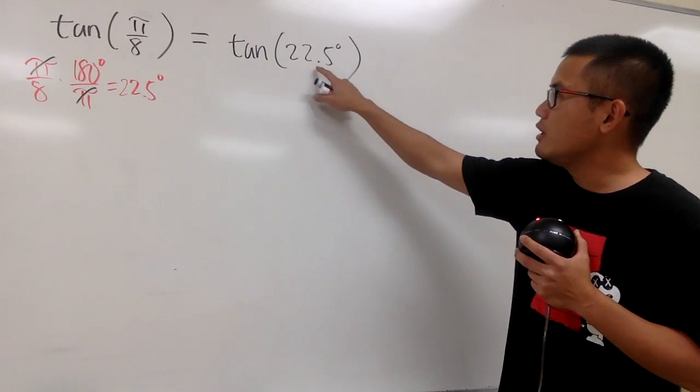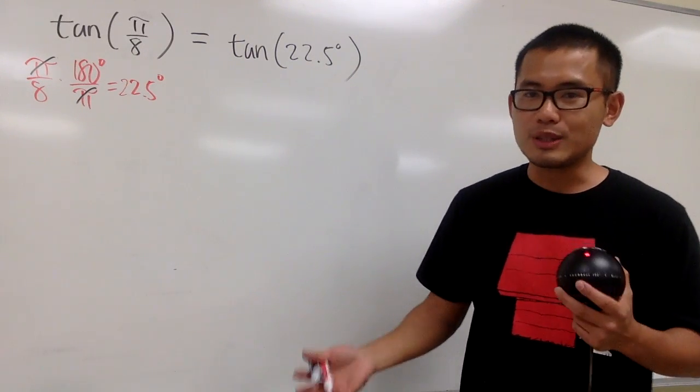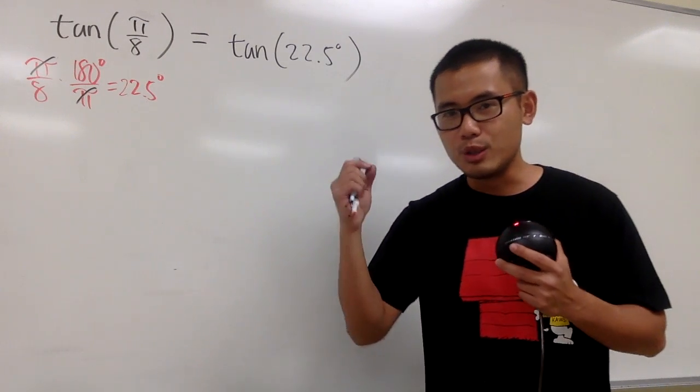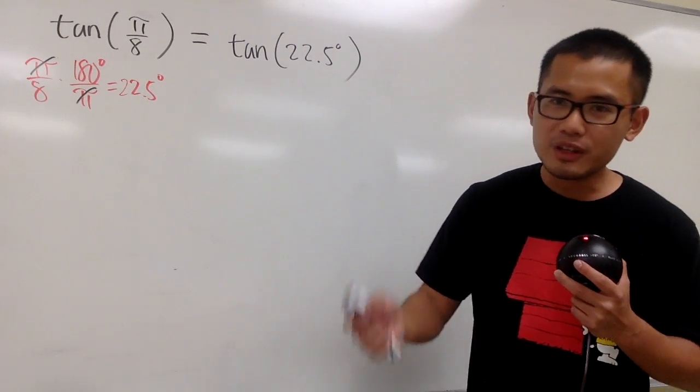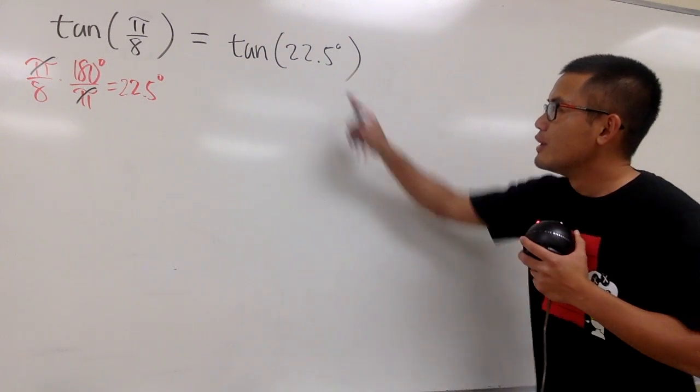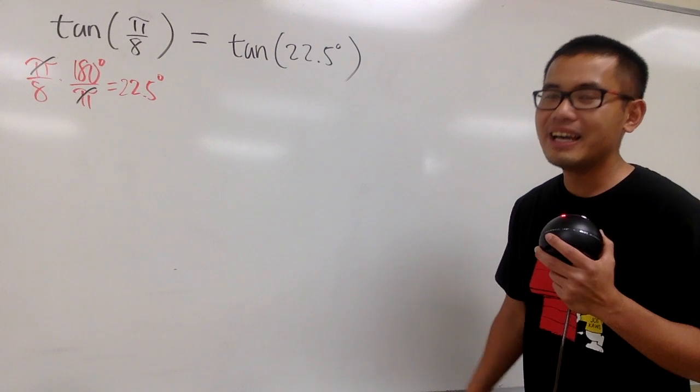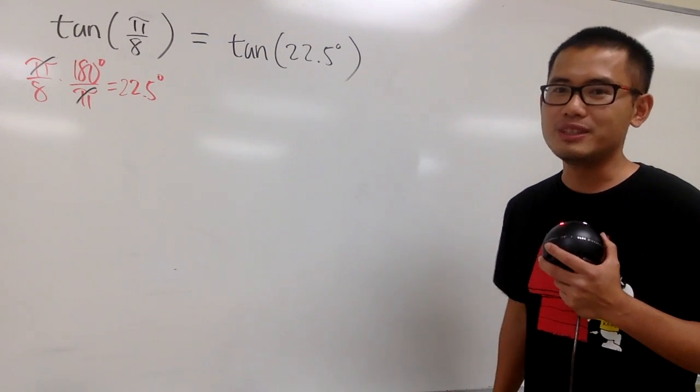If you look at 22.5 and think about it, what are the special angles we know? We know 0 degrees, 30, 45, 60, 90, and so on. 22.5 degrees happens to be exactly half of 45 degrees, isn't it?